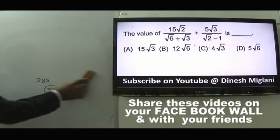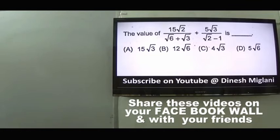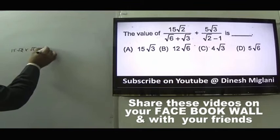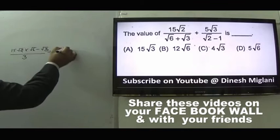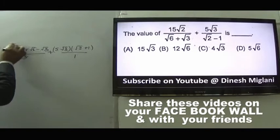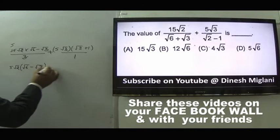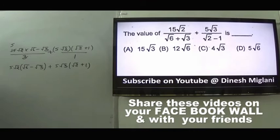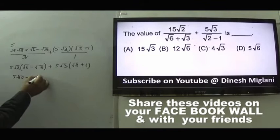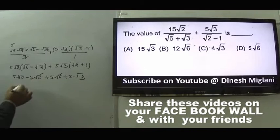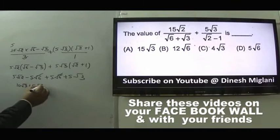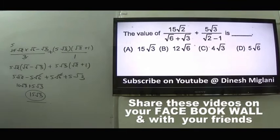Question 36: Rationalizing an expression involving surds. Taking 15√2(√6 - √3) and denominator with (√2+1) terms, expanding: 5√12 - 5√6 + 5√6 + 5√3. The middle terms cancel, giving 10√3 + 5√3 = 15√3. Answer is A.